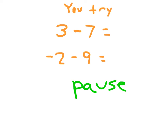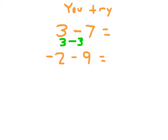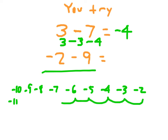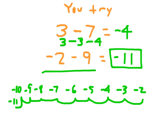As you're learning this, it might help to draw number lines. You can also use the inverse approach. For 3 minus 7: the inverse of 3 is negative 3, so 3 minus 3 gets us to 0, and then we still have to subtract 4 — that's why the answer is negative 4. For negative 2 minus 9: starting at negative 2, going to the left 9 — negative 3, negative 4, negative 5, negative 6, negative 7, negative 8, negative 9, negative 10, and negative 11. That's 9 steps, so negative 2 minus 9 is negative 11.